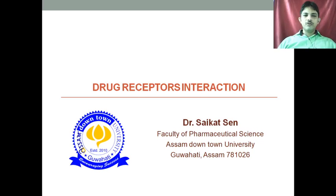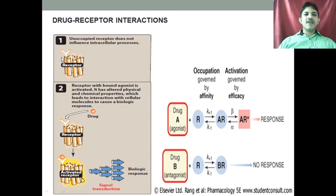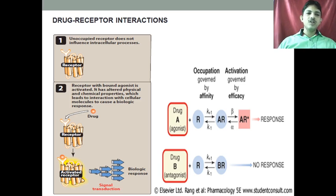Good morning. Today we are going to discuss about the drug-receptor interaction. In drug-receptor interaction, this is the receptor which is unoccupied — meaning the endogenous substance or drug is not able to bind to that receptor. So this receptor does not process any intracellular activities, they are not initiating or altering any intracellular activities.